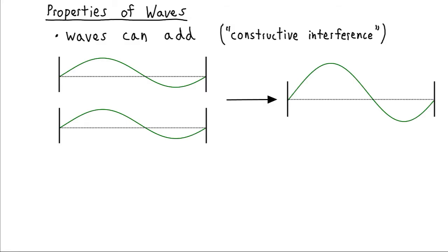Waves have some interesting properties in the way that they interact with each other. They can add together. That's called constructive interference. So if you imagine we have a jump rope here and someone tugs on it in this direction with some amount of force, it will send a wave propagating through the jump rope.